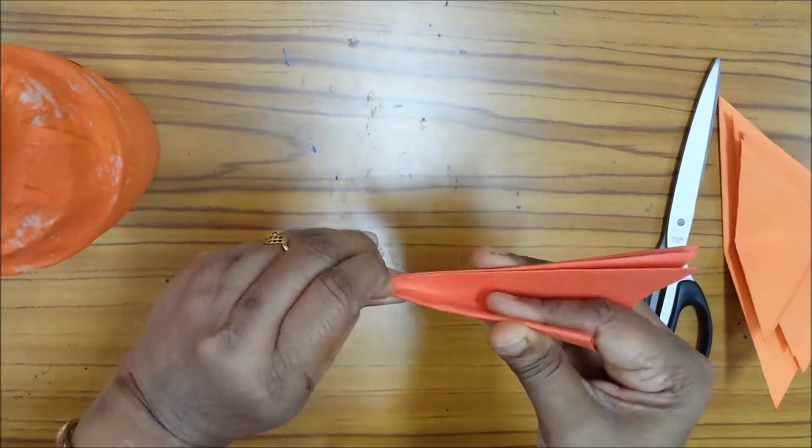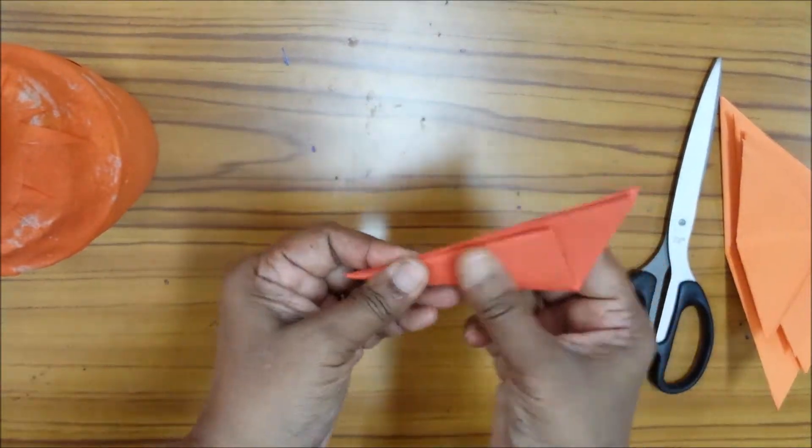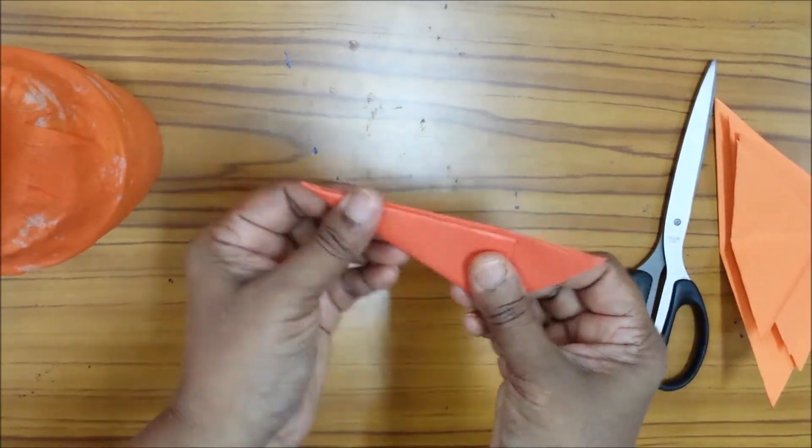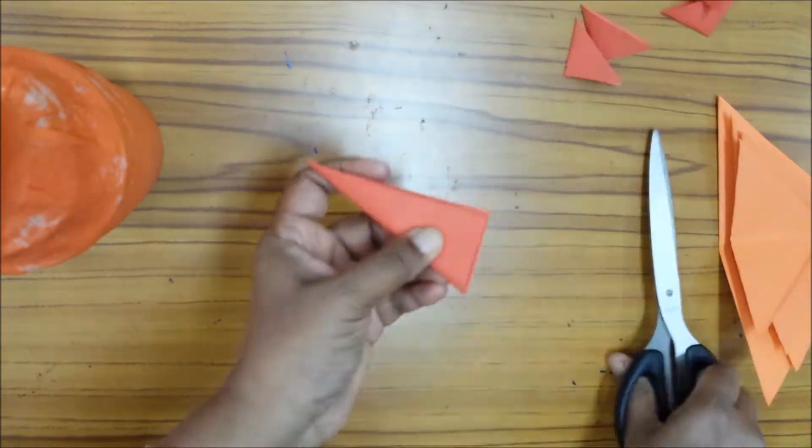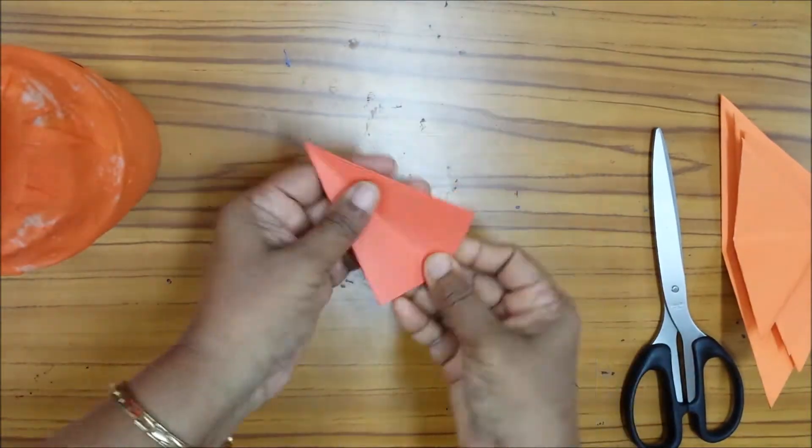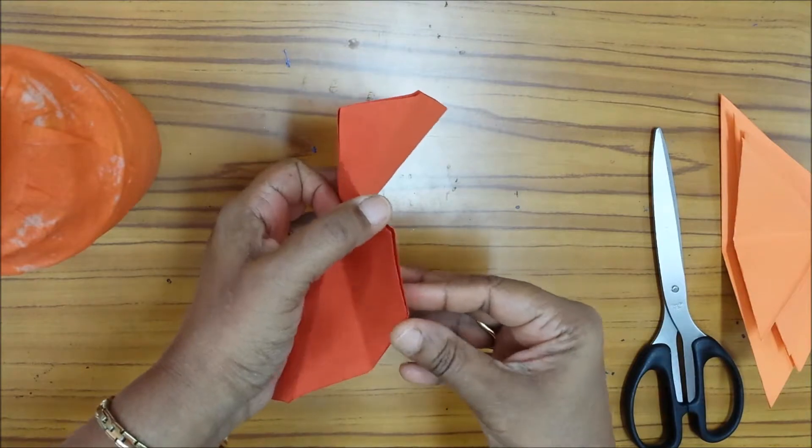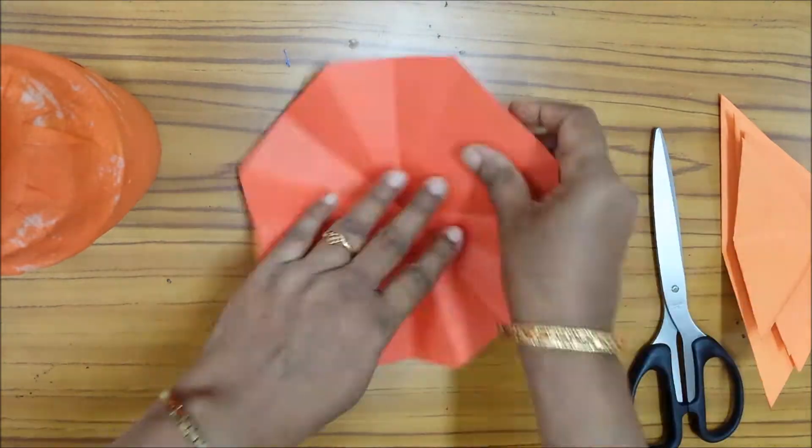again fold it, then cut the edge. You will get one shape, flower shape. Now you have to think petals.